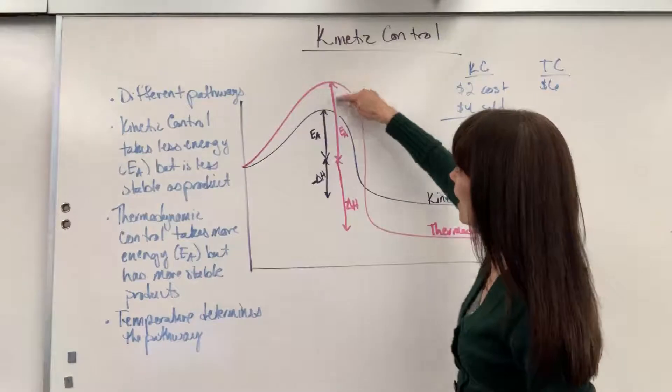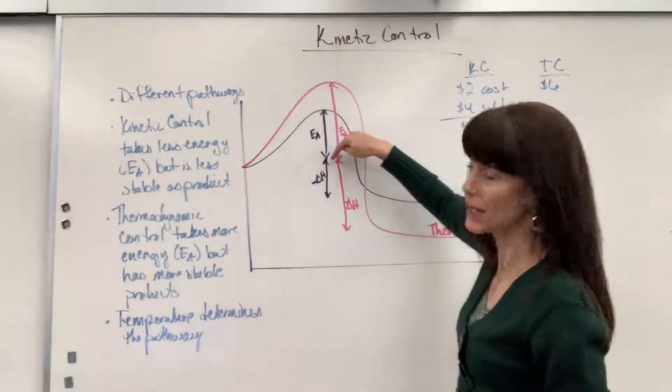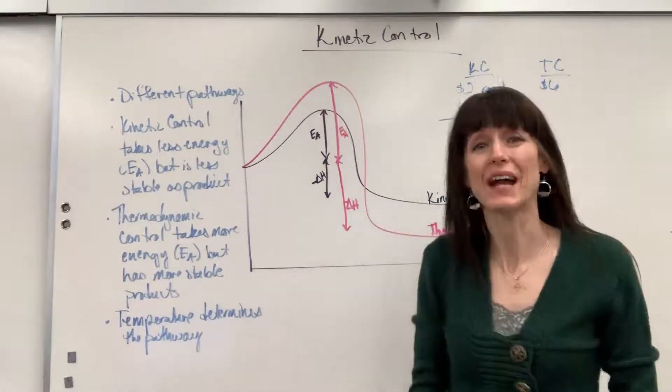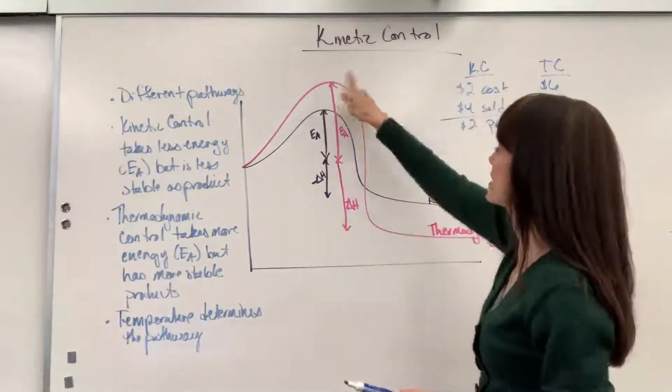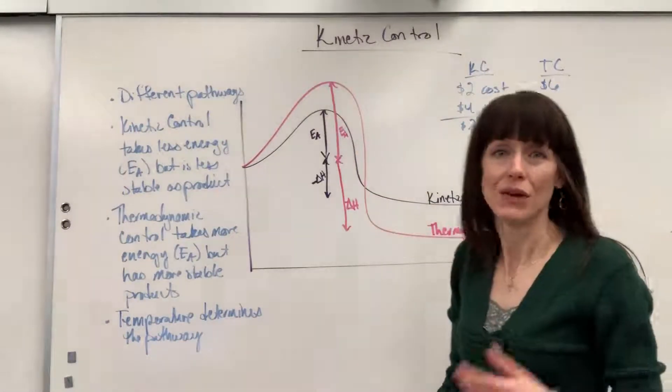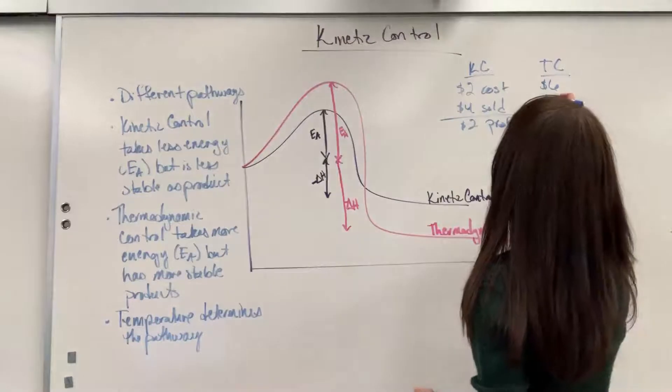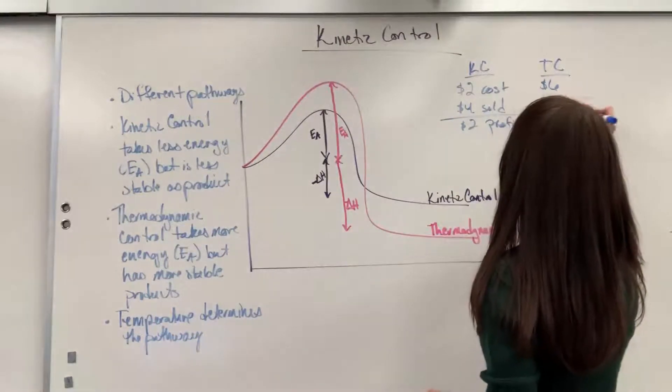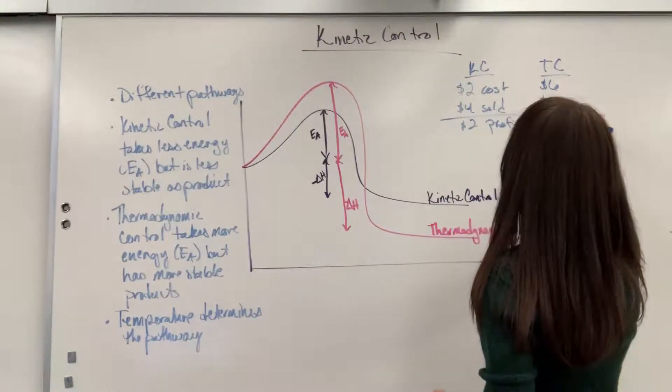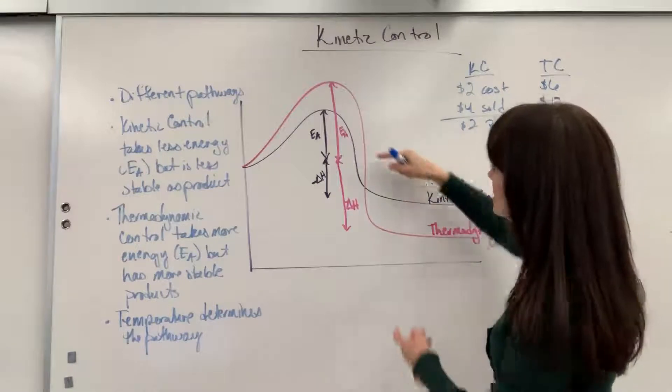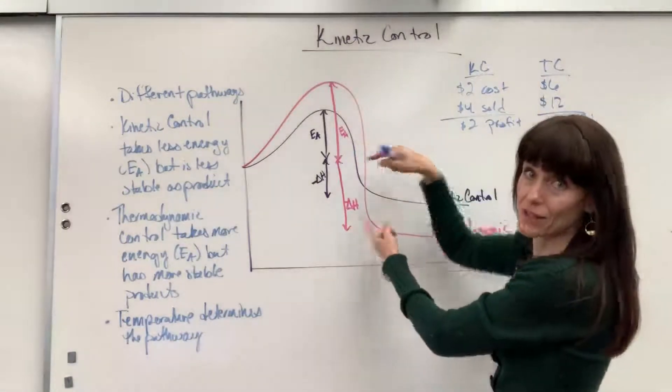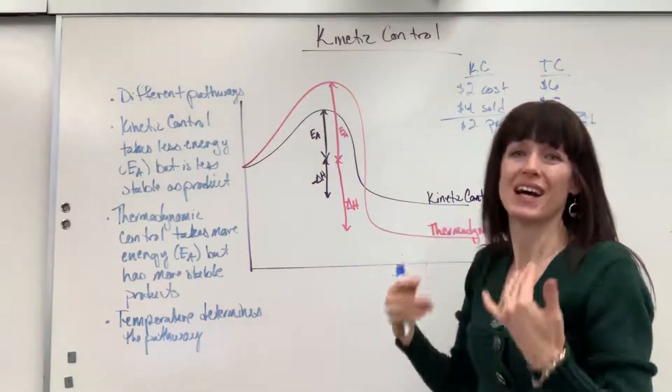So here, you've got a greater activation energy. But because it's higher quality, I can sell that for more. So I end up selling this for, let's say $12, which means my profit is greater. I have a $6 profit, a greater amount of energy that's released, a higher profit.